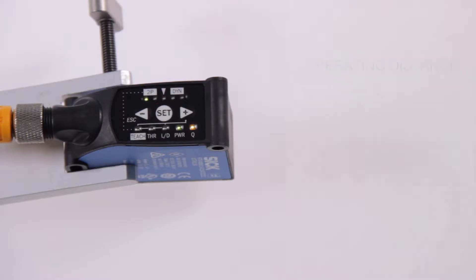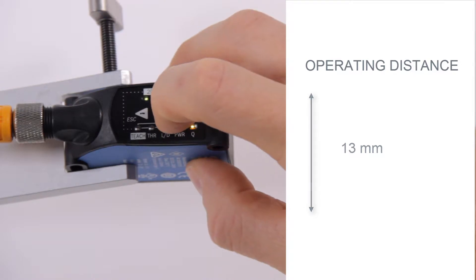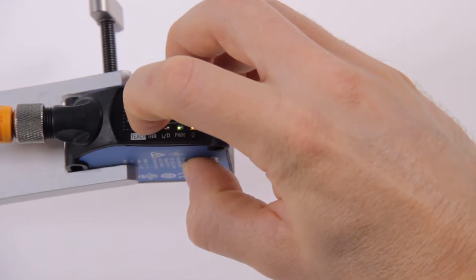Mount the sensor at the operating distance of the sensor which is in this case 13 millimeters. Press the SET button and navigate with the plus and minus buttons to teach.